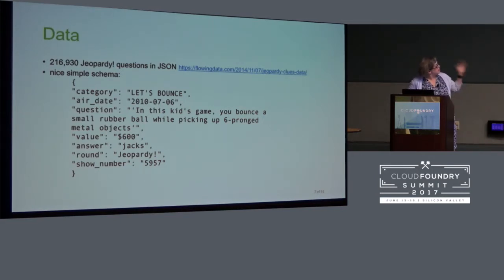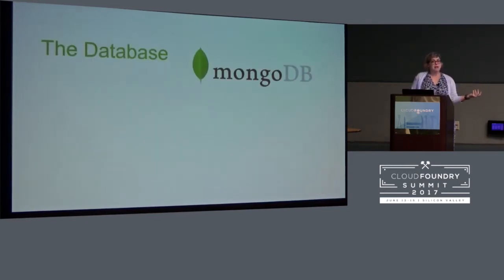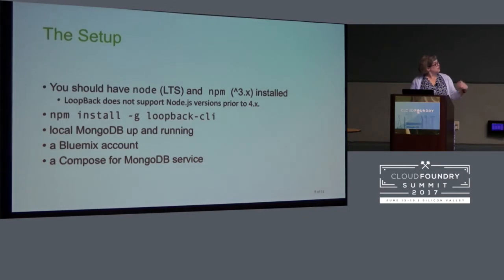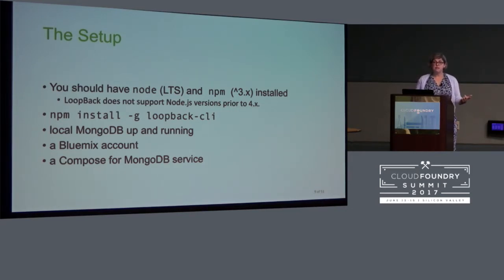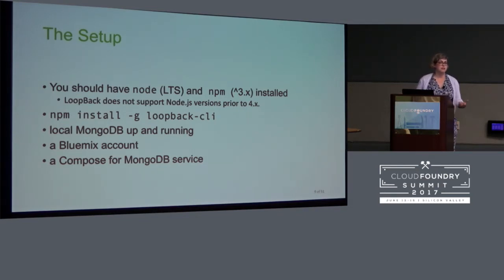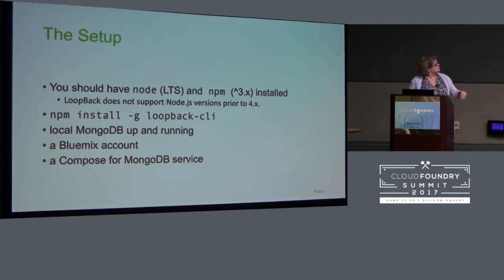This data has a really nice simple schema — very straightforward, a great fun data set to play with. I've been keeping it in Mongo because I'm a Node developer, and that's where Node developers tend to keep stuff. If you wanted to follow along, here's your setup: Node, NPM, and I also really like using NVM — the Node version manager — which lets you switch between different versions of Node on demand. It's great if you want to try out newer versions of Node without blowing away your current setup. Local Mongo, and then I'll show you how it works on Bluemix as well.